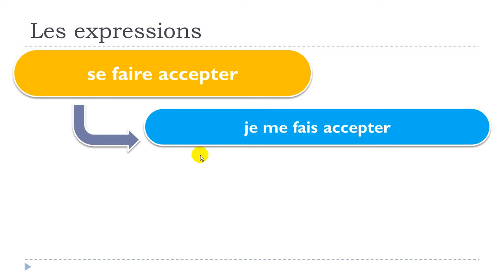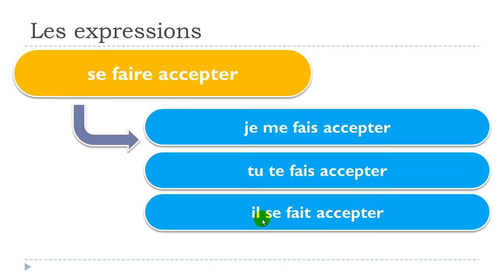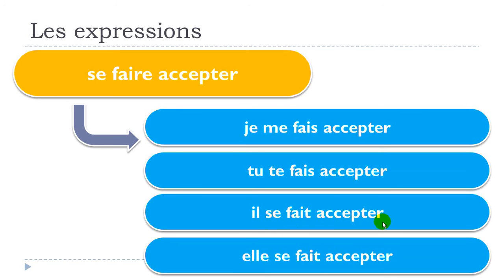Let's see how to conjugate this at the present tense. Since the base form is se faire accepter, you'll need to modify the reflexive pronoun. So: je me fais accepter, tu te fais accepter, il se fait accepter, elle se fait accepter. Remember: je → me, tu → te, il/elle → se.